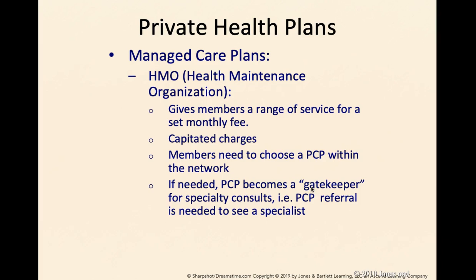Now we need to talk about health plans or private health plans. There is an important difference between health insurance and health plans. Health insurance companies are the companies that sell the health plans. Health plans are something like their insurance package — for example, the type of health plan Blue Cross Blue Shield will have for Medicaid patients. A health plan is literally the product being sold or marketed by the health insurance company, and it stipulates the type of coverage that you have.